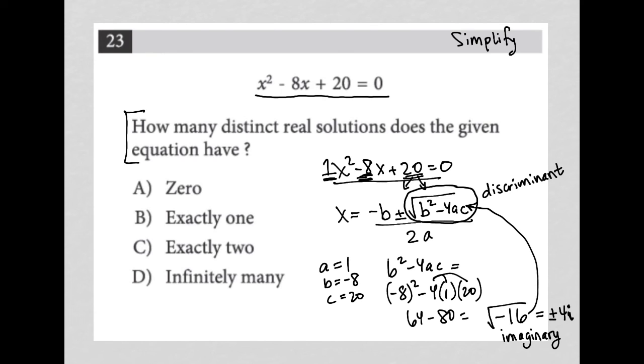This question is asking how many distinct real solutions we have. We just figured out that we actually have imaginary solutions. So there are exactly zero real solutions. That doesn't mean there are no solutions. We're going to end up with two imaginary solutions, but there are zero real solutions to this question.